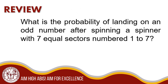What is the probability of landing on an odd number after spinning a spinner with 7 equal sectors numbered 1 to 7? There are 7 equal sectors in total. There are 4 odd numbers — these are 1, 3, 5, and 7. That means the spinner will land on an odd number 4 times out of 7.